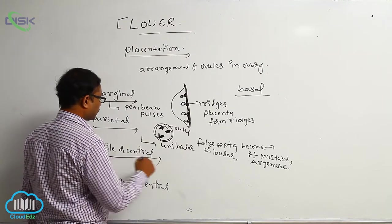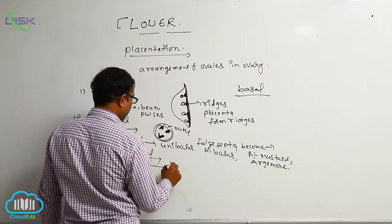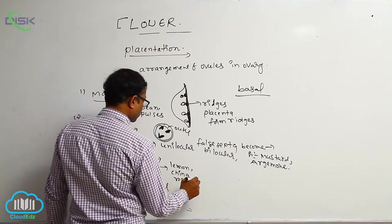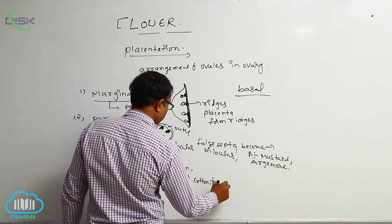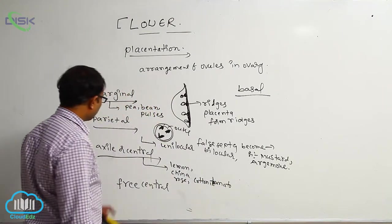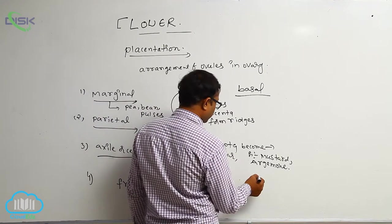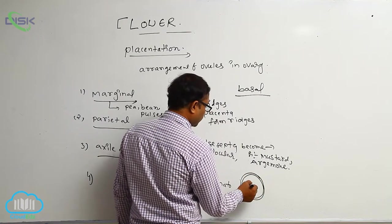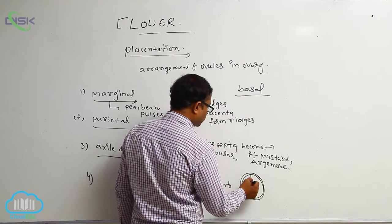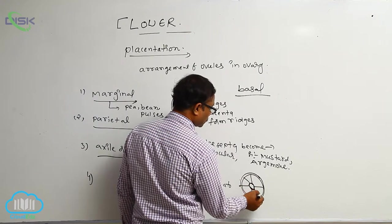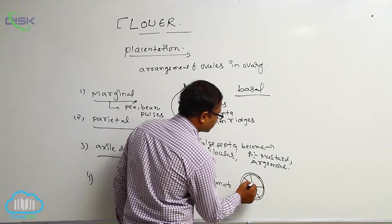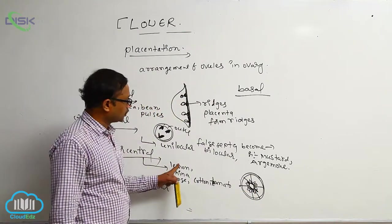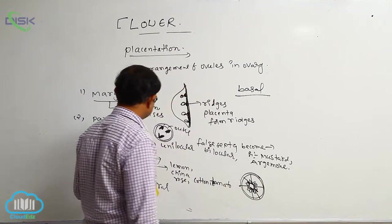In Axial or Central Placentation, the placenta is formed at the center and divided into many septa or cross walls. Ovules are connected to the central axis of the ovary. The ovary has an outer wall and inner wall with a central axis. Examples include lemon (citrus), china rose, cotton, tomato, and brinjal.